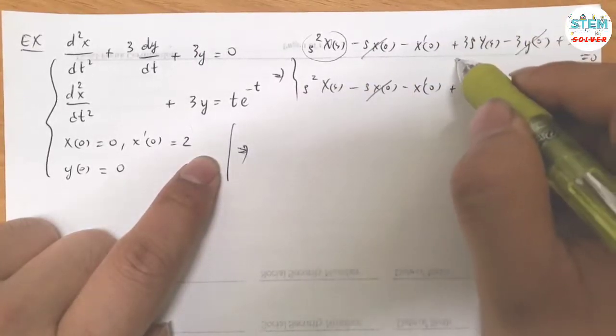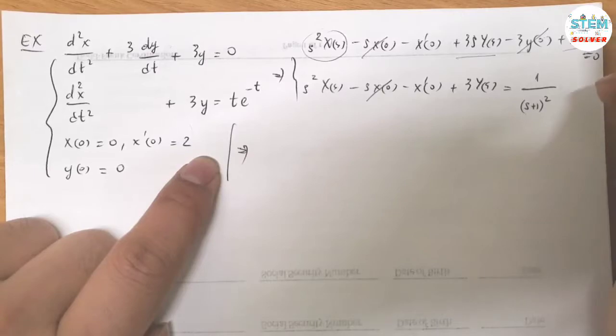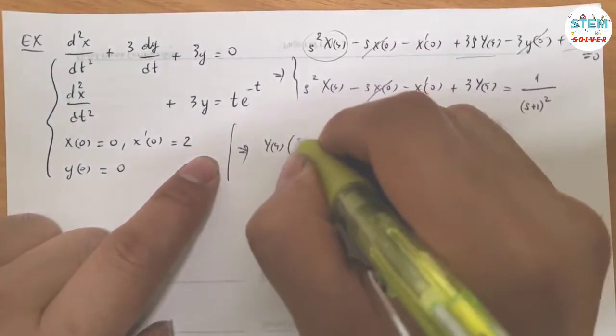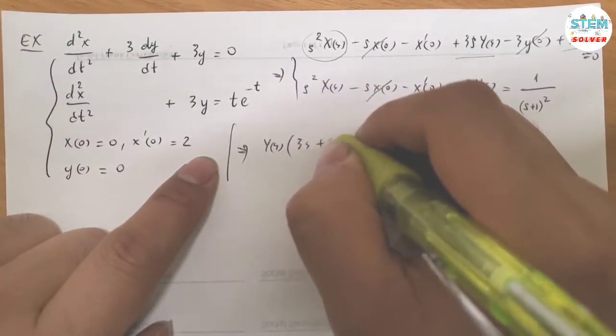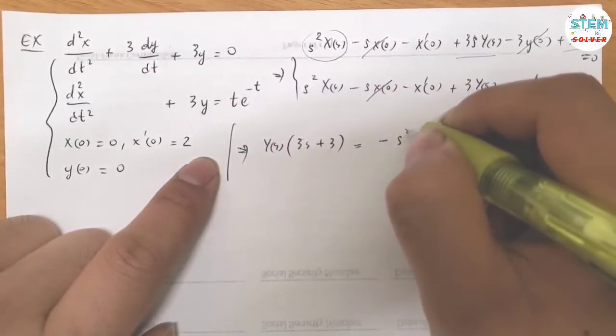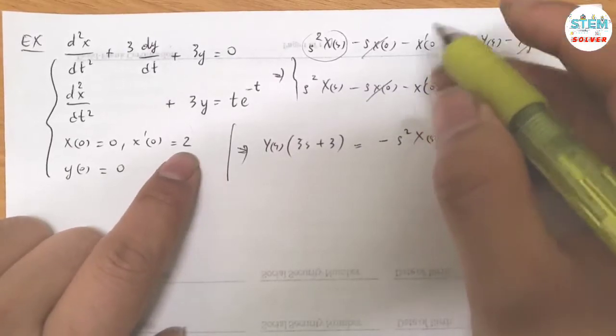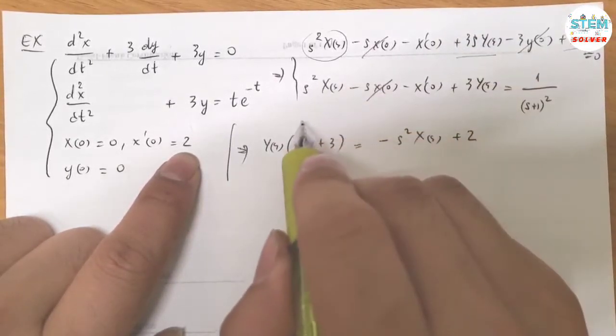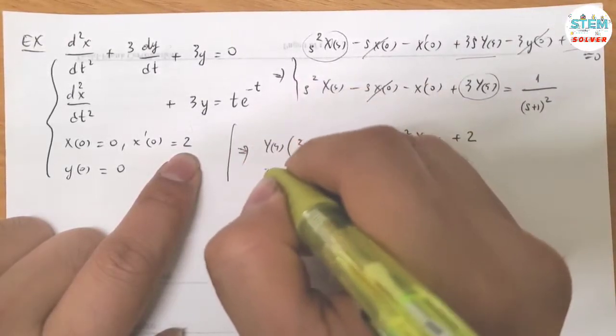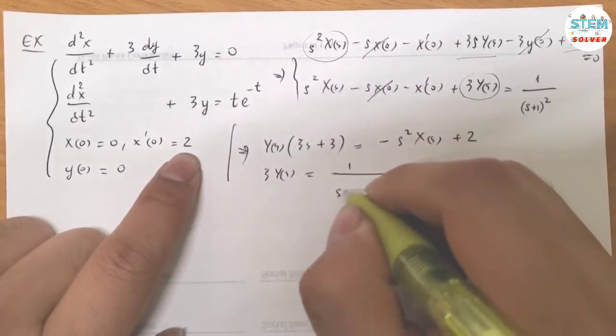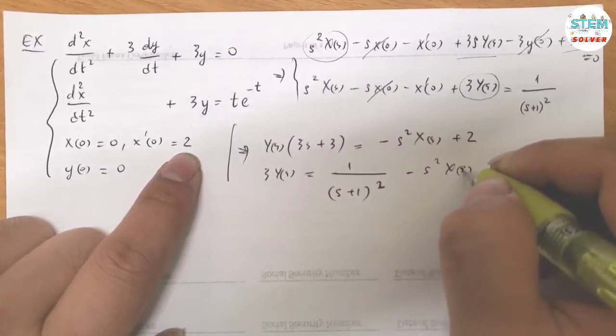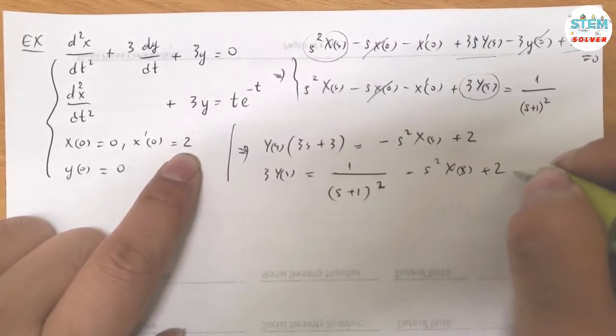So I think for this one, I'm gonna circle the wrong term. Take a look at capital Y of S in factored form. So I have 3S plus 3 in parentheses. That's equal to negative S squared X of S. X of 0 equals 2 plus 2. Down here, doesn't matter which one you choose. So let's pick this one. That's equal to 1 over S plus 1 squared minus S squared X of S plus 2.